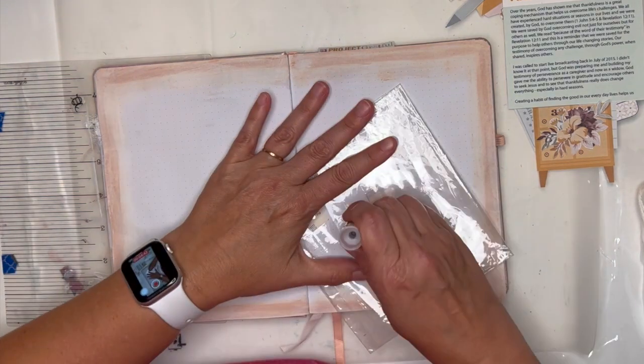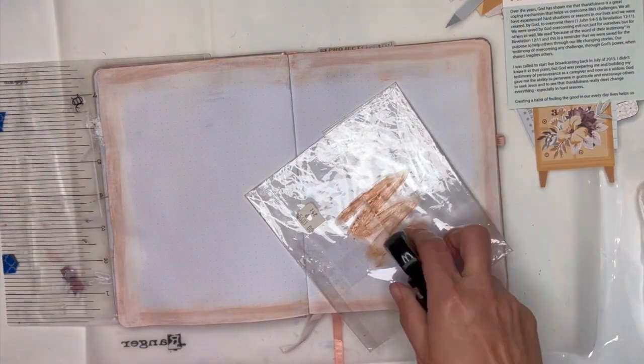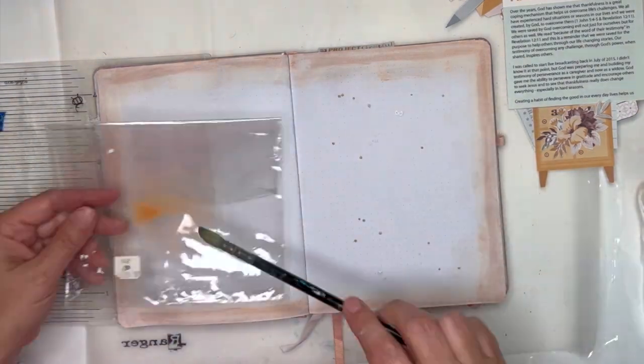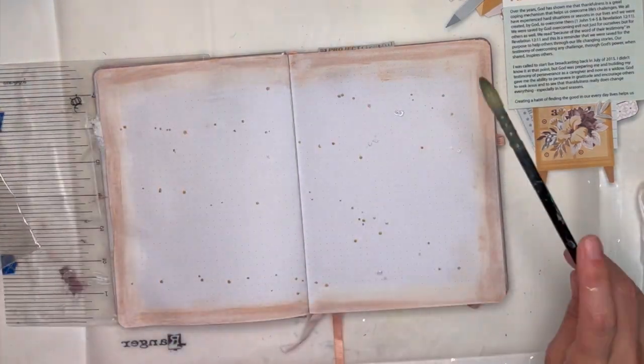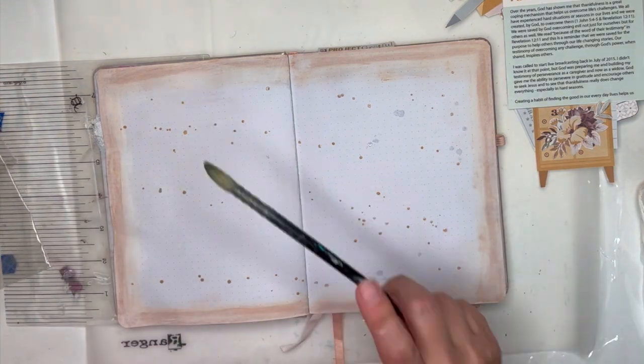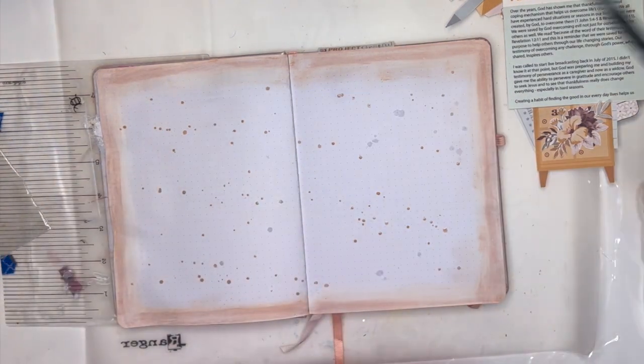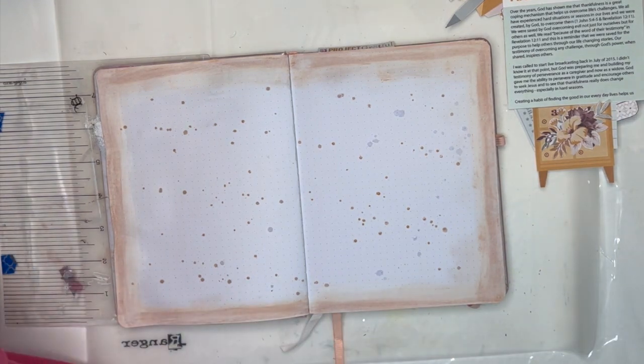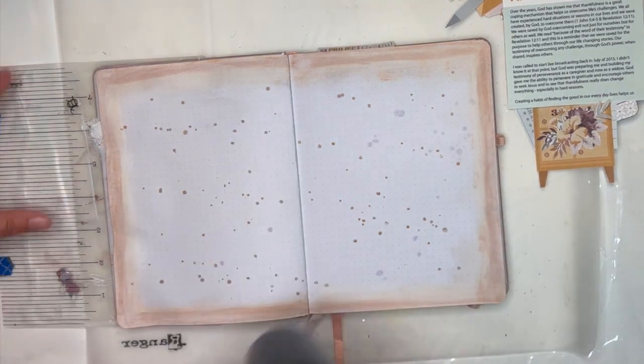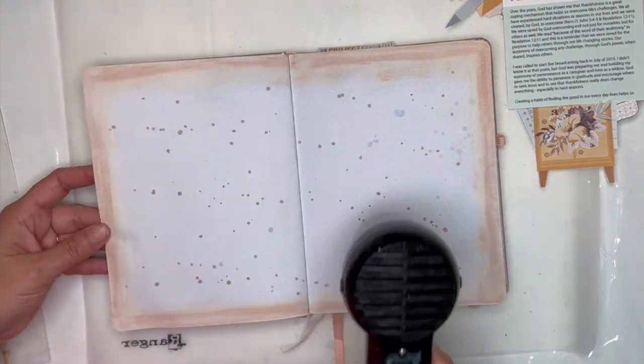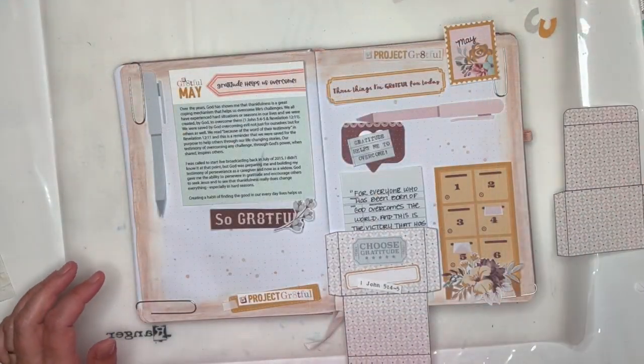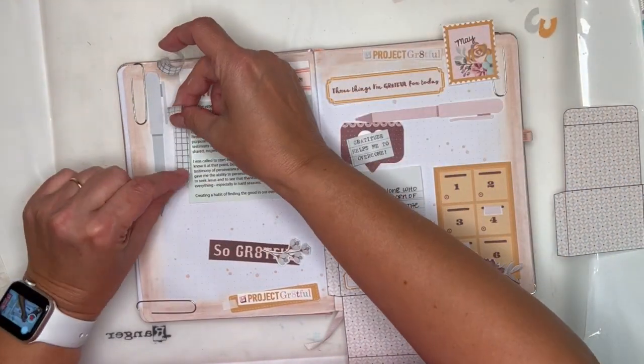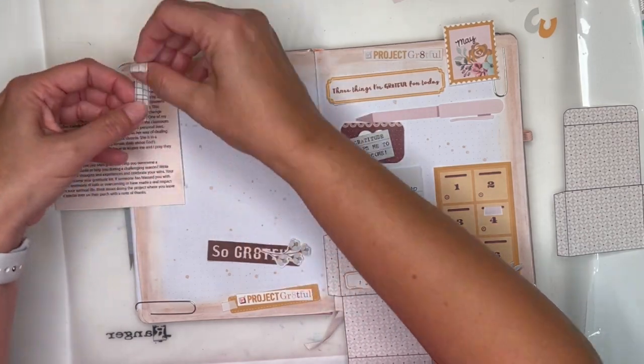I'm rubbing that white acrylic paint just around the edges to soften it and blend it. Now I'm taking that gelato and I'm rubbing it onto some packaging and I wet that and pick it up with a paintbrush and splatter. Here I'm using a big fluffy brush. I want big spots for it. Now I'm going to hit that with my heat tool for just a few seconds.